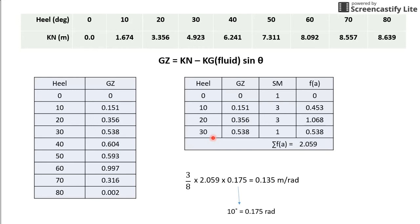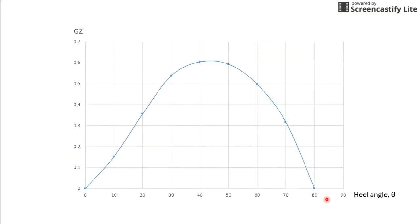So, upon completion of this calculation, you realize that it is actually bigger than 0.055 meter radian. And hence, it actually satisfies the IMO requirement. And in order for you to complete this question itself, you have to do a GZ curve. And your GZ curve would look something like this. Where you use the GZ value you have calculated previously versus the heel angle.